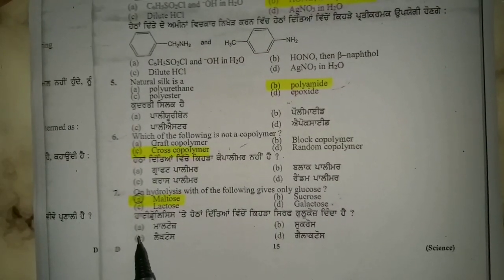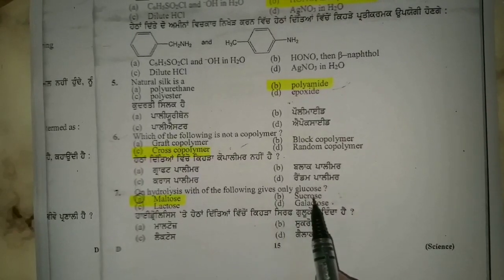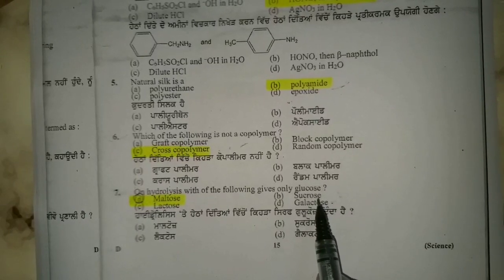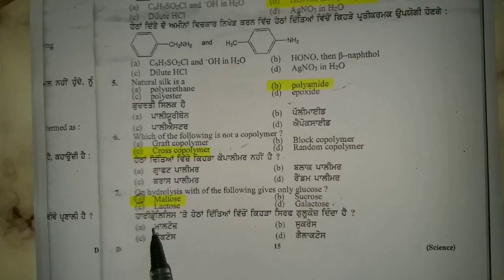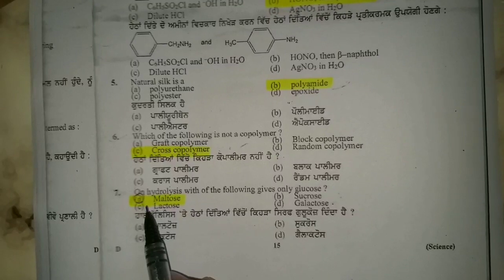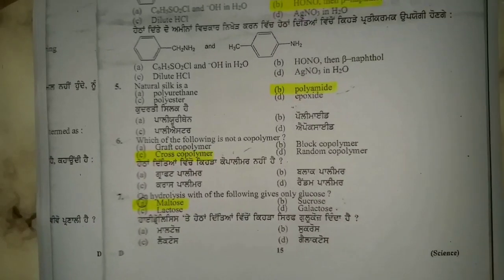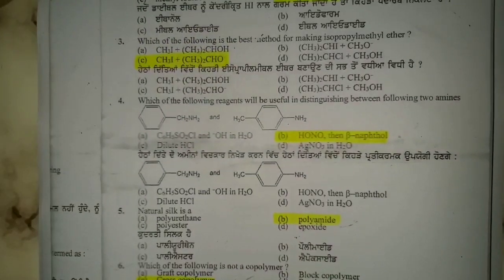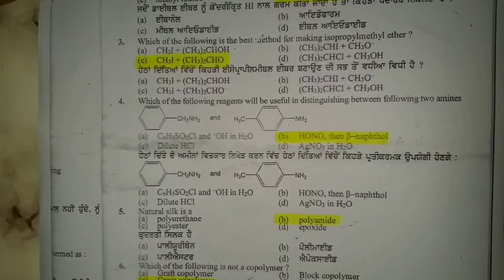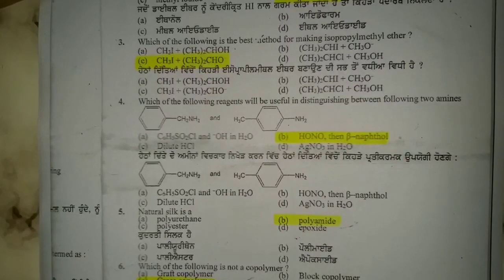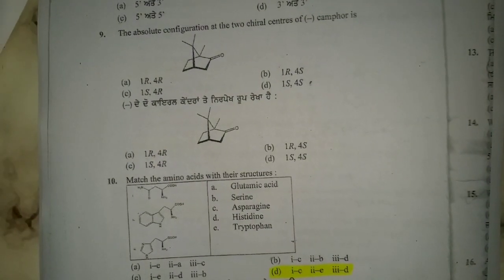Question seven is a very easy question in the paper. Hydrolysis with the following gives only glucose — so glucose is the correct option. If there is a question in the paper and you don't have the answer, you can take a screenshot of this video to keep it for preparation. It will be very helpful.